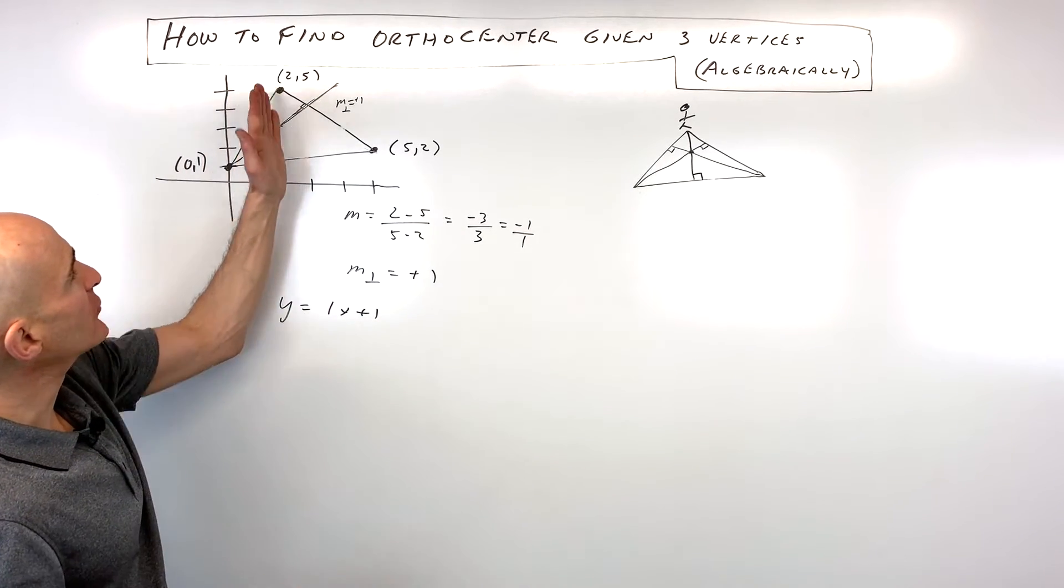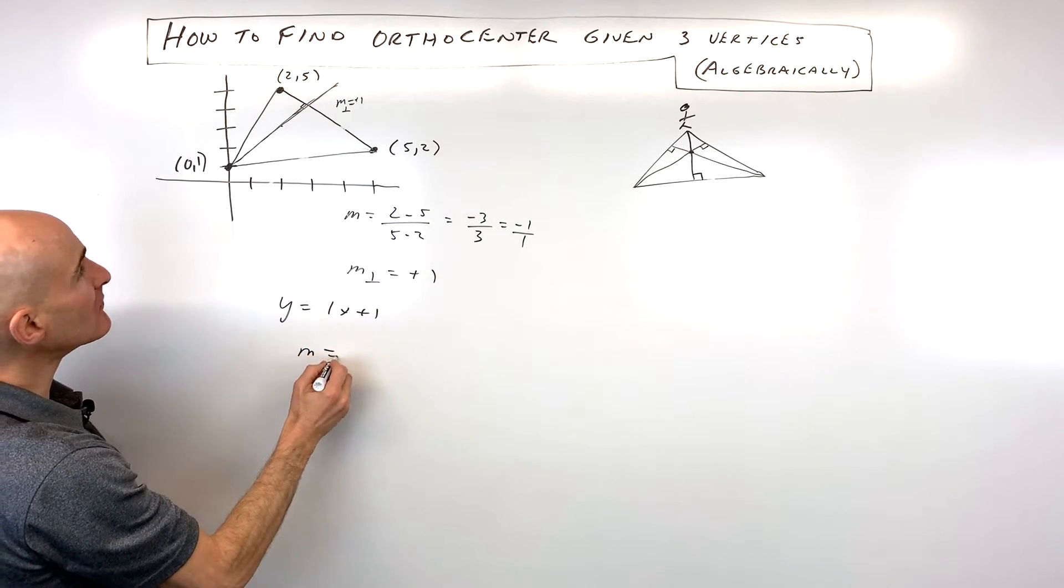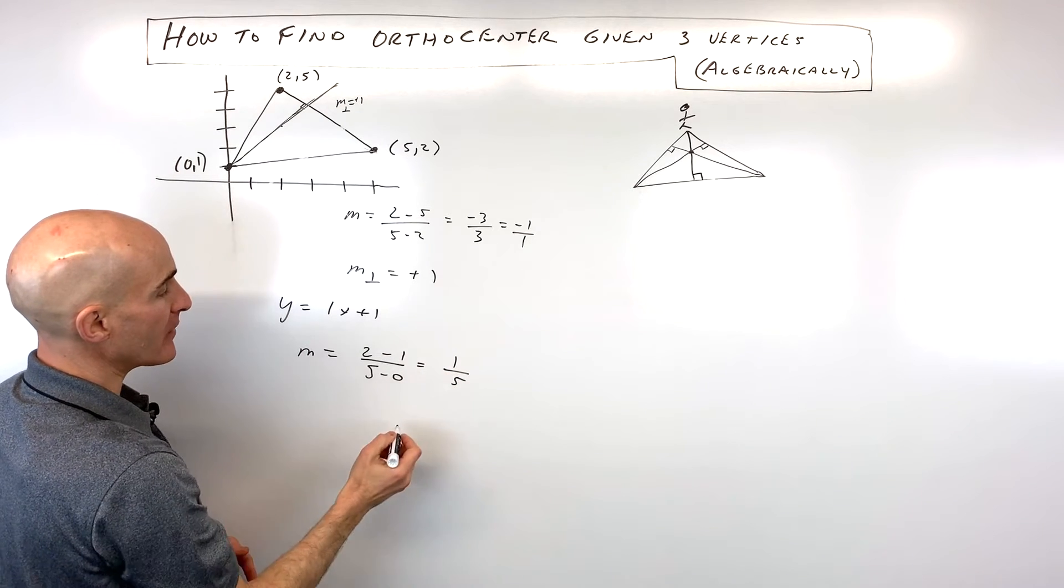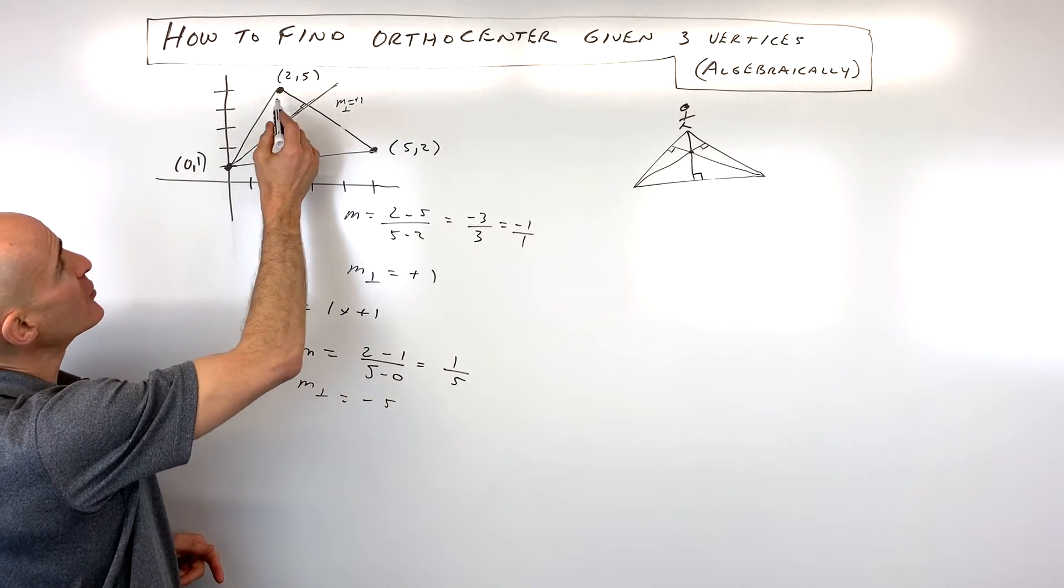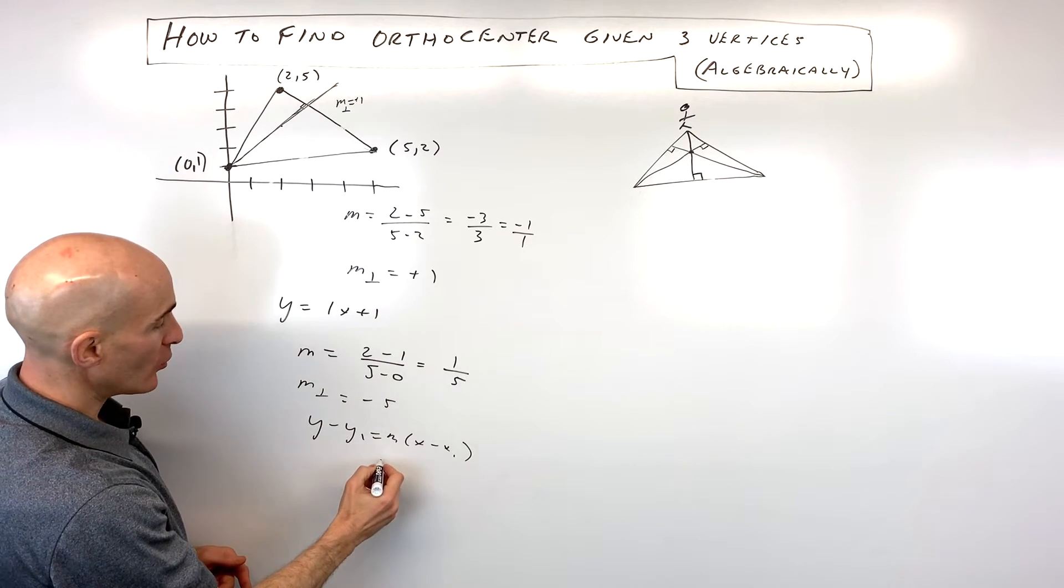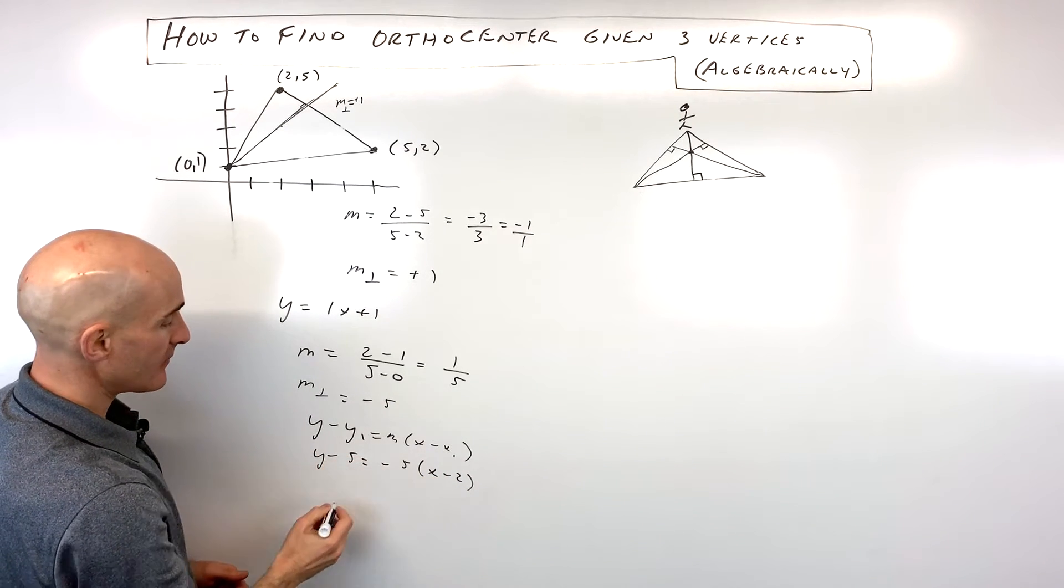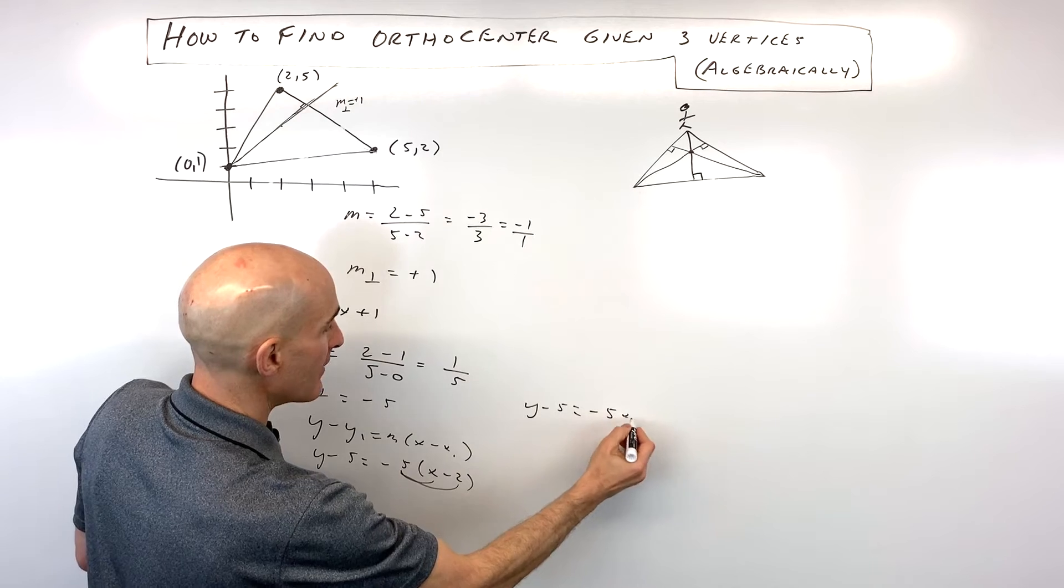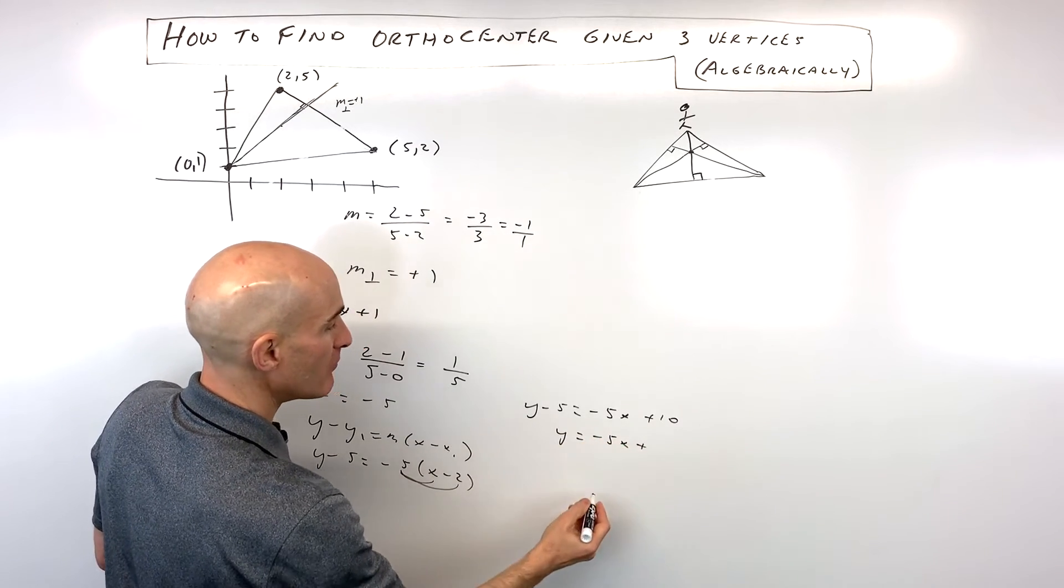Now let's find the altitude from this point to the opposite side. The slope of this line is (2 - 1) over (5 - 0), which gives us 1/5. The perpendicular slope is negative 5. Since it goes through point (2, 5), I'll use point-slope form: y - y₁ = m(x - x₁). With slope of -5 and point (2, 5), we get y - 5 = -5(x - 2). Distributing the -5 gives y - 5 = -5x + 10. Adding 5 to both sides: y = -5x + 15.